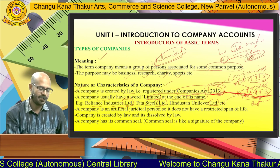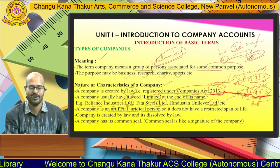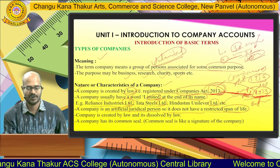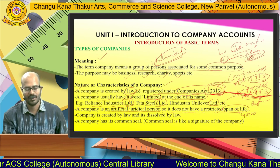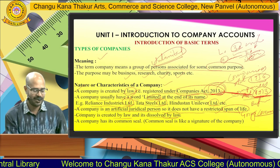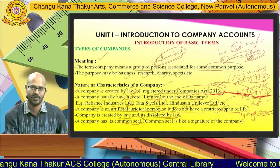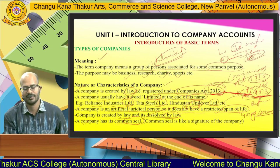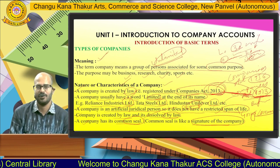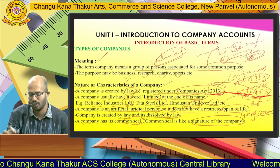The next nature or characteristic is that a company is an artificial juridical person — it is created under law and dissolved under law only. It does not have a restricted span of life; a company that continues to operate is called a 'going concern.' The next characteristic is that a company has a common seal — a stamp that is used like the signature of a company.